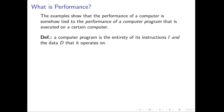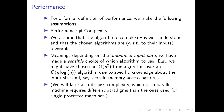This brings us to our first definition: a computer program is the entirety of its instructions I and of the data D that the computer program operates on. Performance is not complexity — it is not big O notation and asymptotics as discussed in computer science courses.